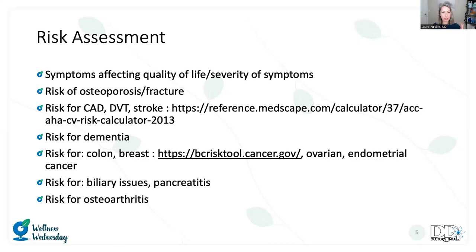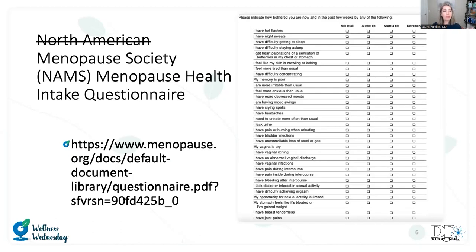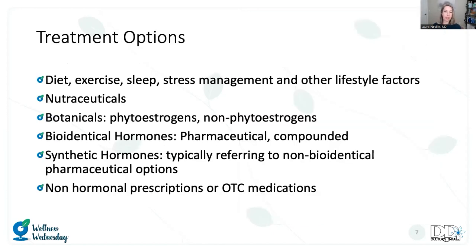Oral estrogen specifically has been shown to increase biliary and pancreatitis risk, and there's also the risk for osteoarthritis. We always want to take into account the individual's priorities, values, fears, and concerns — making sure we're truly individualizing this and listening to them. For a great intake questionnaire for menopausal patients, the North American Menopause Society — they've recently changed their name — has a comprehensive questionnaire. You might take pieces of it and use it as a template for your intake form.